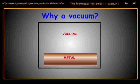Why must the metal target be enclosed in a vacuum? If you did not enclose the metal in a vacuum, the emitted electrons would just ionise the air and you couldn't measure the effect.